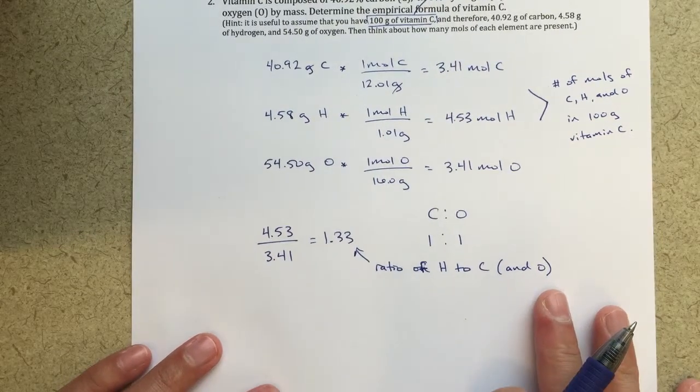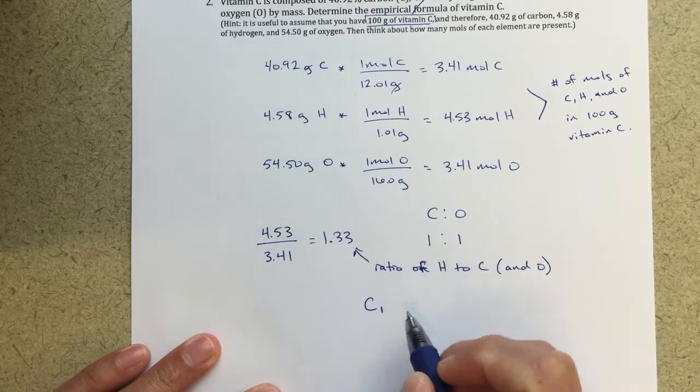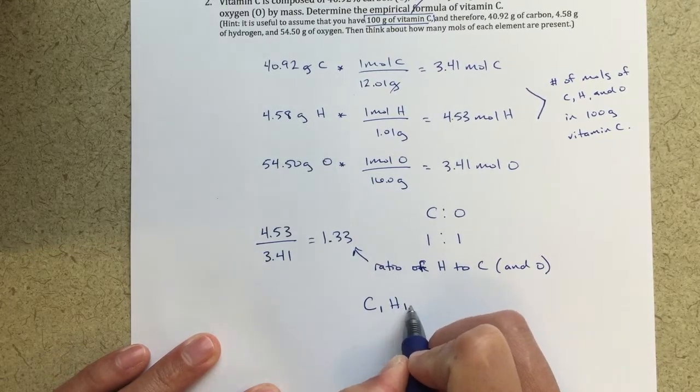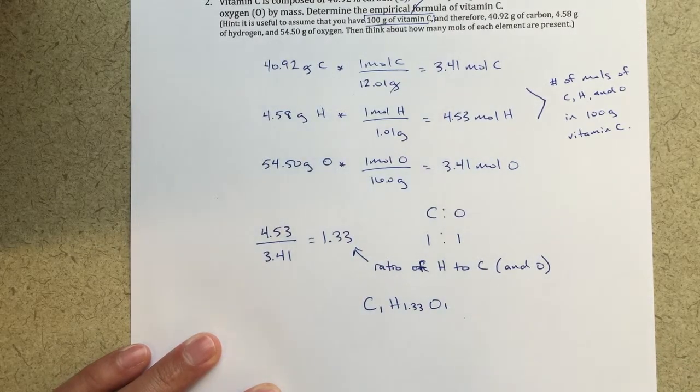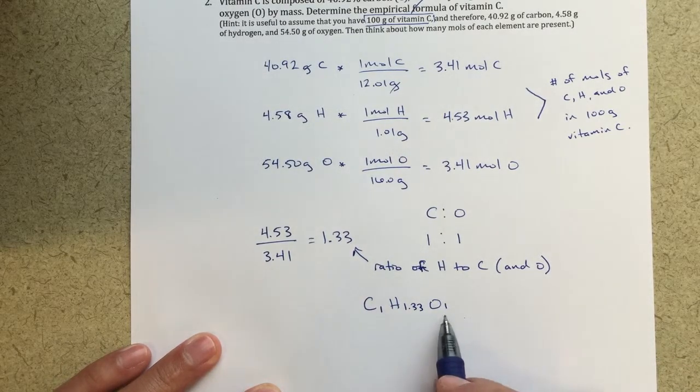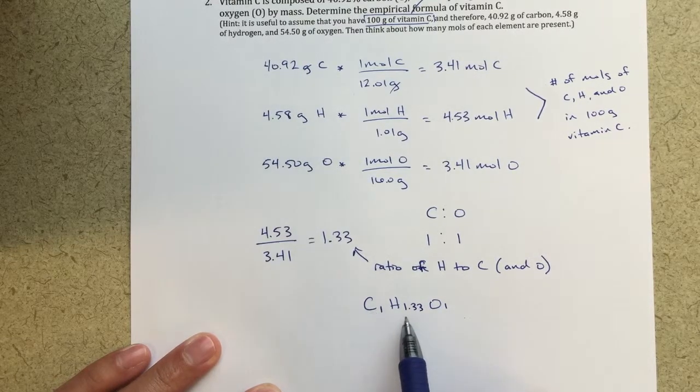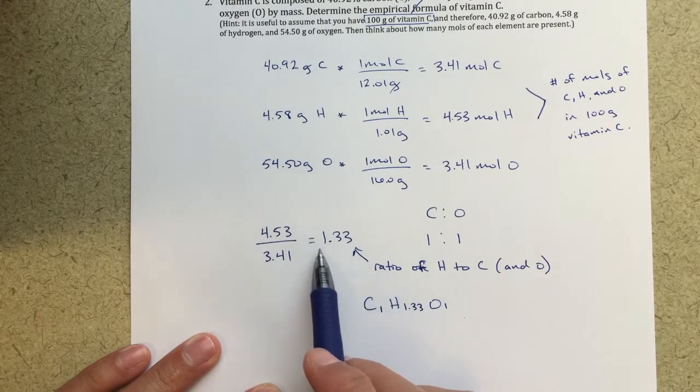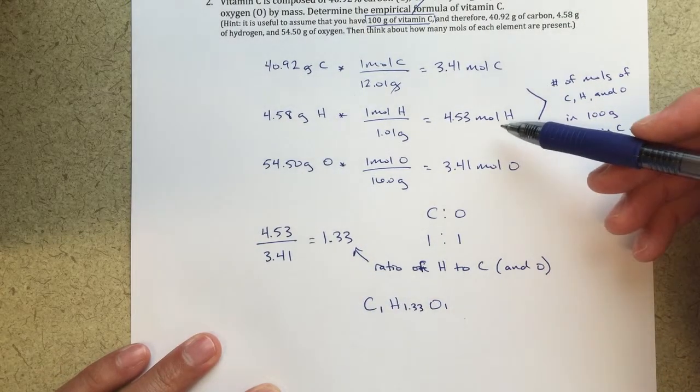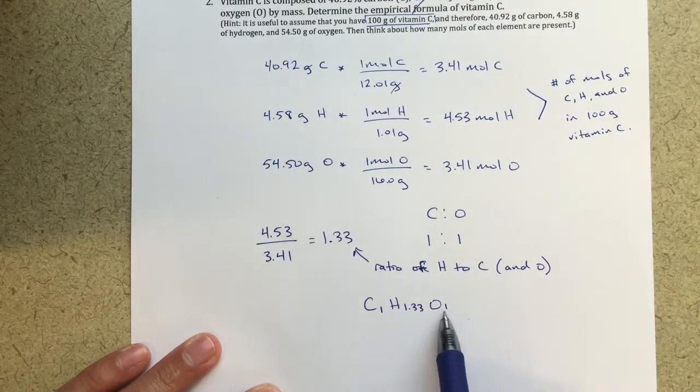From here, carbon has a one, hydrogen has 1.33, which obviously cannot really be the case, but we'll get to that in a second, and oxygen has a one. This is my proper ratio. For every one carbon atom, I have 1.33 hydrogen atoms. I know this because I calculated the ratio between my moles of hydrogen and my moles of carbon, and then one oxygen atom.